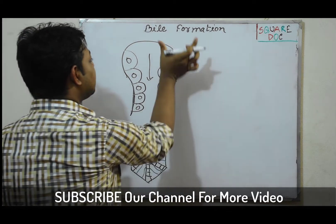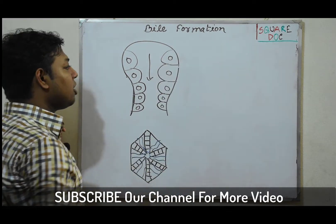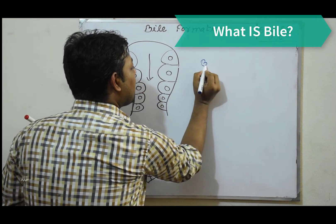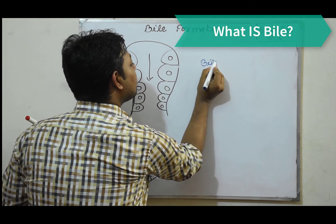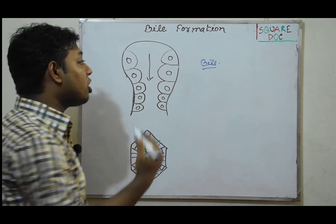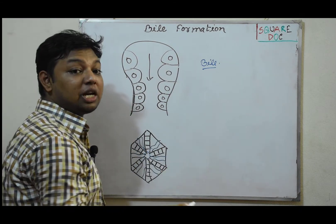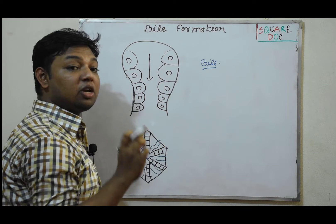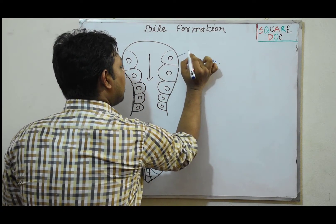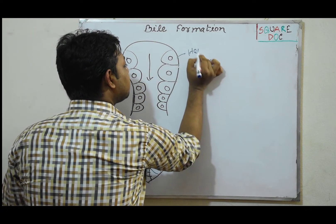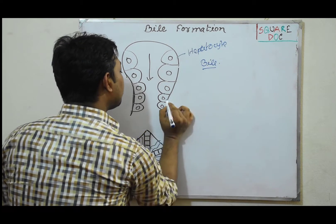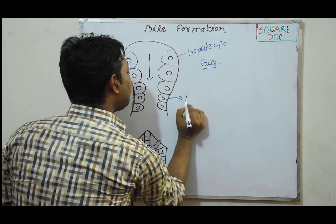What is bile? Bile is a digestive juice. It is continuously produced in the liver by hepatocytes and epithelial cells.